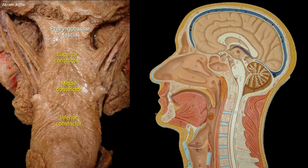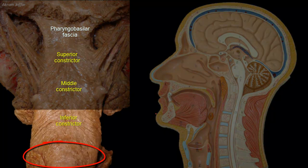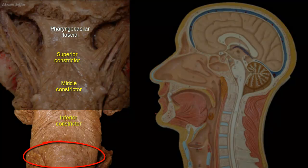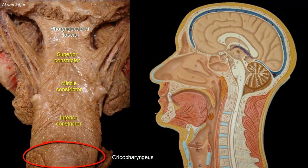In the oropharynx or laryngopharynx, decreased tone of the pharyngeal muscles that accompanies neurological disease results in easy collapsibility of the pharynx and airway obstruction. Air is not sucked into the esophagus during inspiration because the lower part of the inferior constrictor muscle has horizontal fibers that act as a sphincter at the lower extent of the pharynx, called the cricopharyngeus muscle. These horizontal fibers are always closed except during swallowing, preventing air from being sucked into the esophagus. Air is sucked only into the permanently open trachea through the larynx.